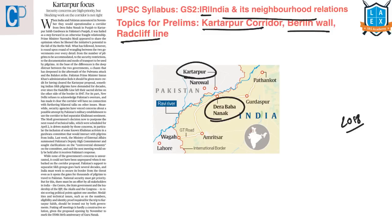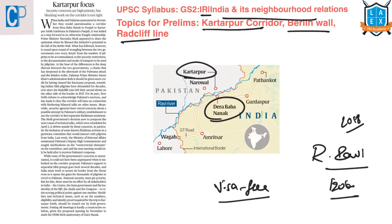The Kartarpur Corridor is a corridor that will link India with the Kartarpur Gurudwara in Pakistan in order to facilitate pilgrims from India to visit Pakistan's Kartarpur Sahib, which is located on the banks of river Ravi and is 120 km northeast of Lahore. This corridor will provide visa-free access to the shrine for Sikhs from India. It will cut down the journey pilgrims have to make from more than 200 km to just 6 km, extending from Dera Baba Nanak in Gurdaspur district to the international border in Pakistan.